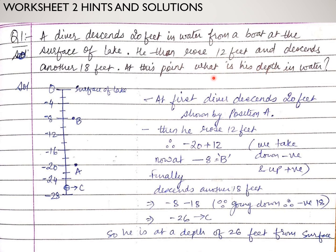This diver is first getting into the water at a depth of 20 feet, then coming up 12 feet, and then again going down 18 feet. Finally, it is being asked: what is his depth in the water? In these types of questions, as we did in exercise 1.1 also, whenever we take a number line, we have to decide what direction we take as positive and what direction we take as negative. We normally take up as positive and down as negative. So in this case, I have taken downside as negative and upside as positive.